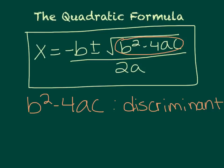If b² minus 4ac is a positive number, then you know you're going to be taking plus or minus the square root of a positive number, which gives you two real answers. And you could break that down into rational or irrational, depending on if you could take the square root of it or not.